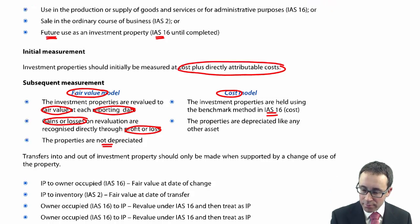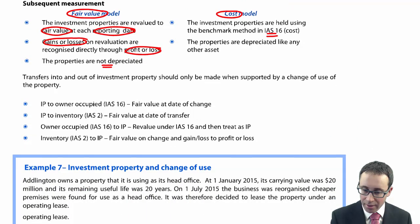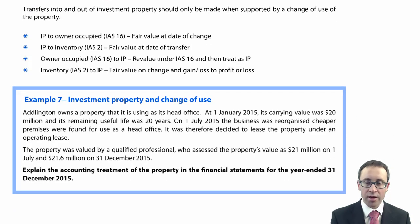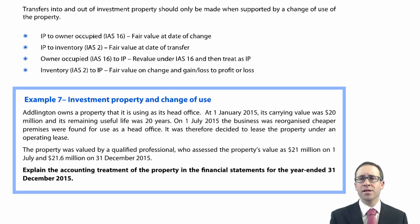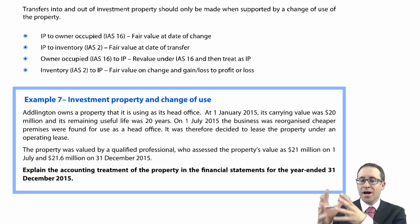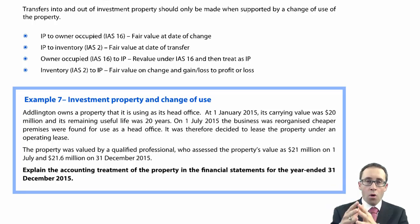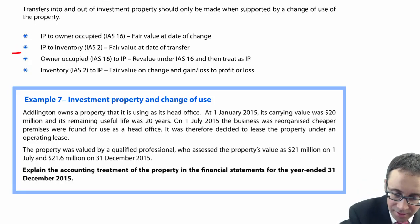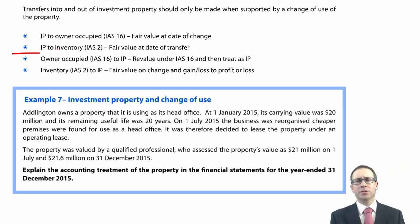The final area of investment property before we look at an example is changes in use — where a property was previously treated under IAS 16 or IAS 2, and then moves into investment property, or vice versa. You can effectively split this into four scenarios covering those two directions of transfer.